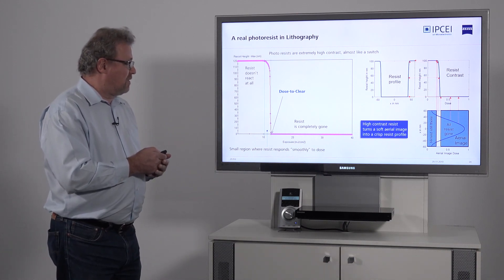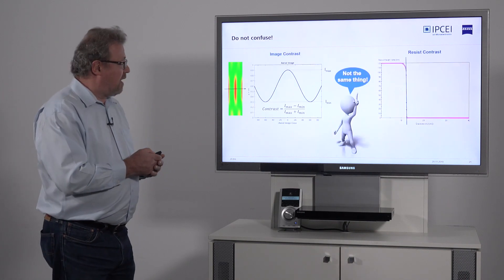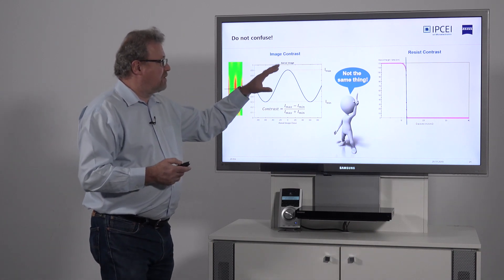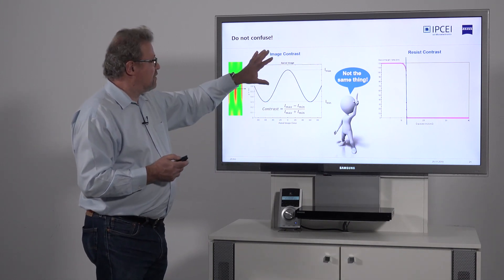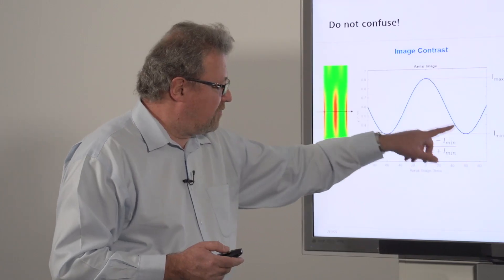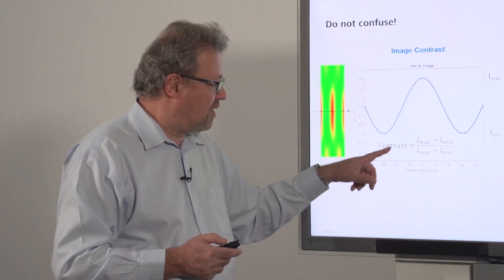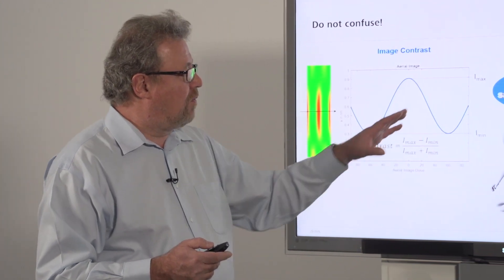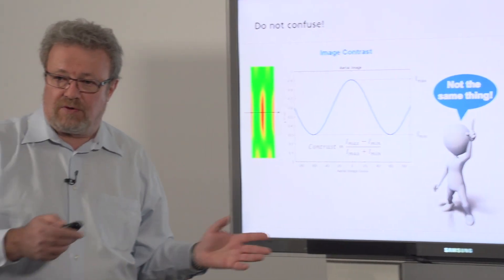These guys are definitely enablers in making lithography happen. One thing to keep in mind: sometimes people get confused because contrast is used for two different things. In optics, we use contrast as the ratio of minimum and maximum intensity in an aerial image — the delta divided by the sum — while resist contrast is the slope of this curve. So it's not the same thing, even though it has the same name.